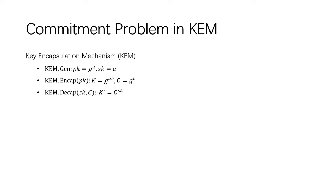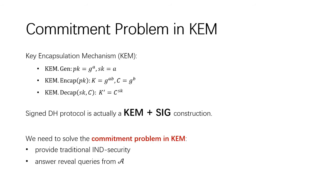Consider the following DH-like KEM. The public key is g^a, the ciphertext is g^b, and the encapsulated key is g^ab. It's easy to observe that the signed DH protocol is actually a KEM and SIG construction. Therefore, to achieve tight security for AKE, we need to solve the commitment problem in KEM. More precisely, the underlying KEM requires not only that the encapsulated key in the key challenged ciphertext are pseudorandom, but also that the challenged ciphertext can be revealed to the adversary together with the encapsulated key.